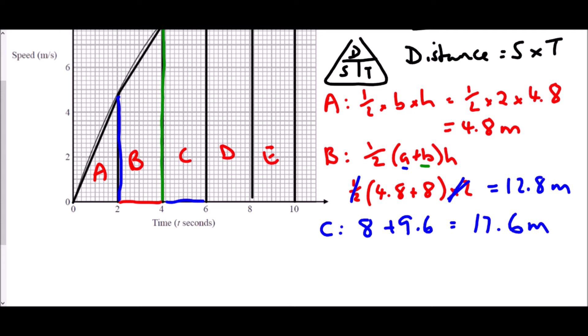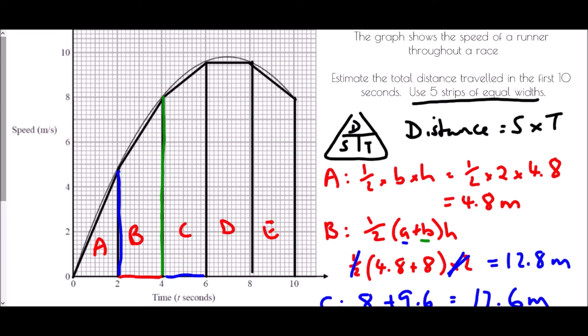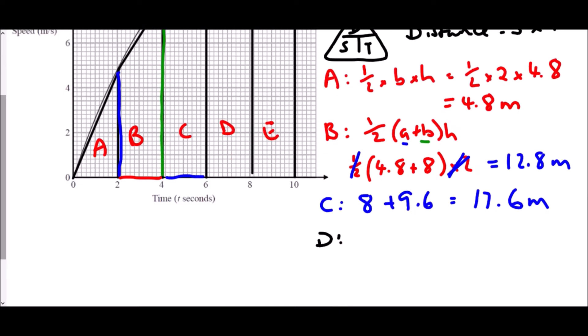In section D, we've just got to be careful of what the shape is in D. If we have a look, this is a flat line at the top, and therefore we have a rectangle. And so actually, what we have is just 2 as the width times the height, which was 9.6. And so that is 19.2 metres.